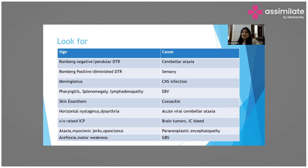Splenomegaly, rashes, and lymphadenopathy are highly suggestive of Epstein-Barr virus or infectious mononucleosis. Nystagmus, speech disorder, and dysarthria suggest acute post-infective viral ataxia. Raised ICP suggests tumors or intracranial bleed. Myoclonic jerks, ataxia, and opsoclonus are always suggestive of neuroblastoma or paraneoplastic syndrome. Areflexia and motor weakness suggest GBS — specifically the Miller-Fisher variant, which presents with lower motor neuron weakness, acute flaccid paralysis, ophthalmoplegia, areflexia, and ataxia.